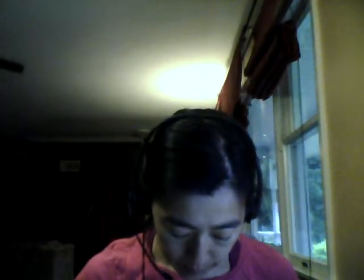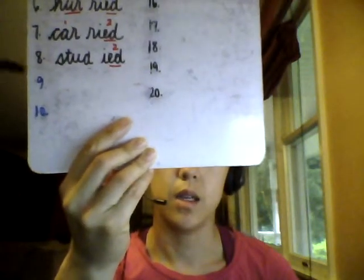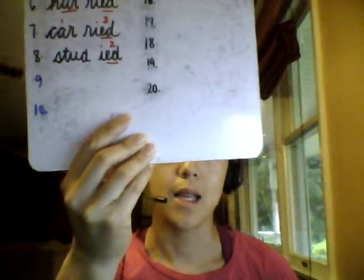Number 8: studied. She studied her math book for the test. Two syllables — think to spell study: S-T-U-D-I. Change the Y to an I and add ED. Spell out loud with me: studied, S-T-U-D-I-E-D. Studied.